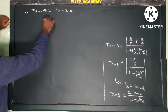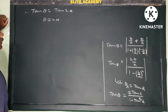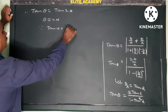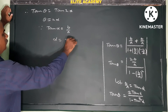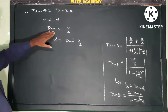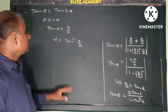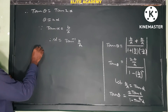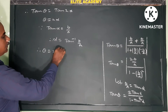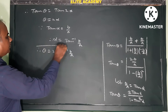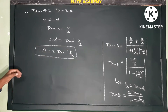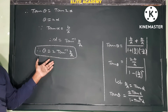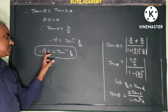Since tan θ = tan 2α, eliminating tan on both sides, we get θ = 2α. Since tan α = b/a, we get α = tan⁻¹(b/a). Substituting α here, therefore θ = 2α = 2tan⁻¹(b/a). This is the formula to find the angle between the asymptotes of a hyperbola, which are the straight lines touching the hyperbola at infinite distance.